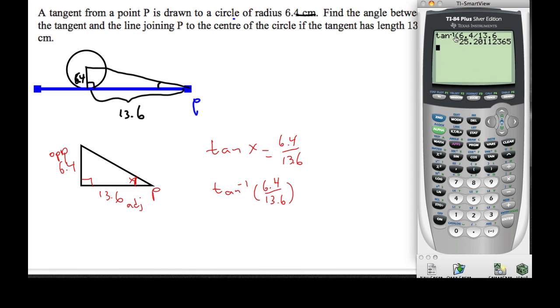So, the inverse tan of 6.4 over 13.6 is 25.2.